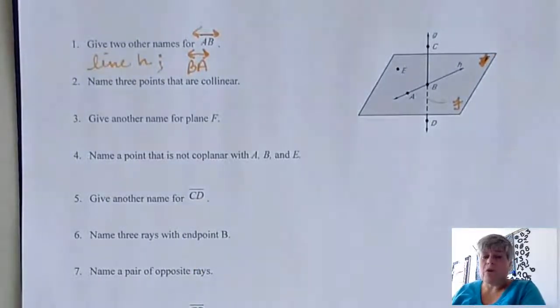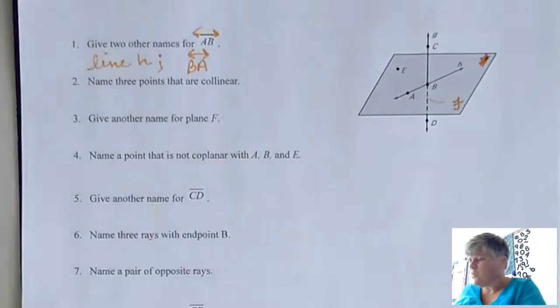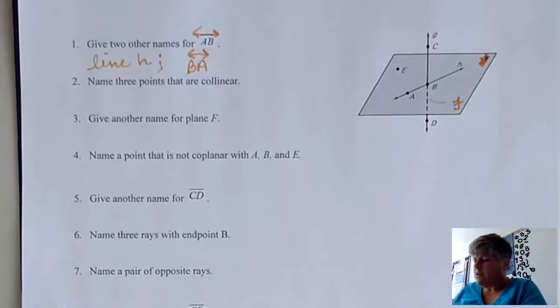Remember with rays we can't do that. With a ray there's a certain direction, but with a line we can. With a line we can say it's going up to down or down to up, left to right or right to left. So that's the first one with finding two other names for line AB.